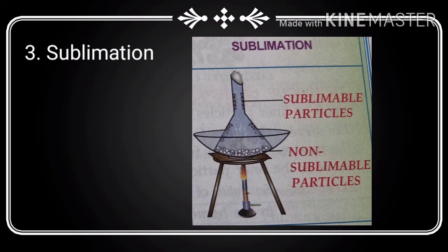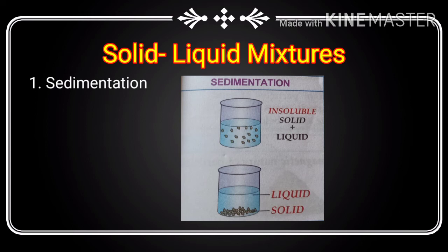The technique of sublimation: the mixture is heated in an evaporating dish covered with a funnel plugged at one end with cotton. The sublimable solid sublimes and the vapor condenses on the inner side of the funnel. The non-sublimable solid remains behind in the evaporating dish. An example is the separation of ammonium chloride and sodium chloride in the laboratory. Other sublimable substances are iodine, naphthalene, and camphor.